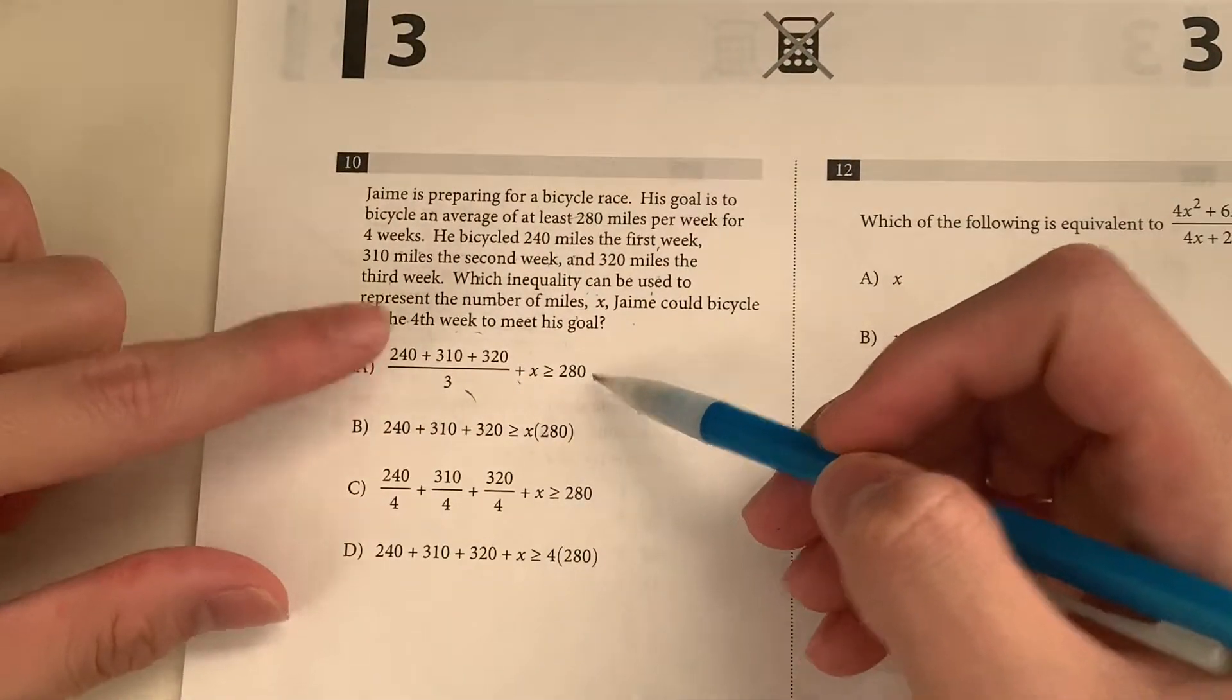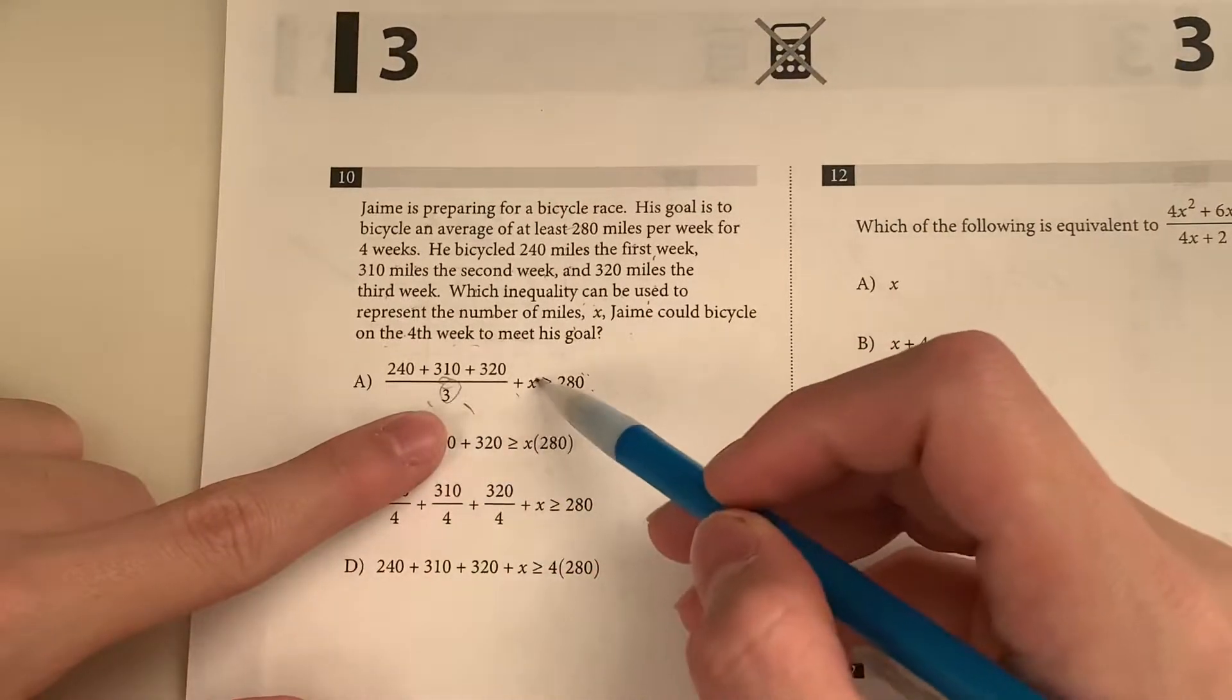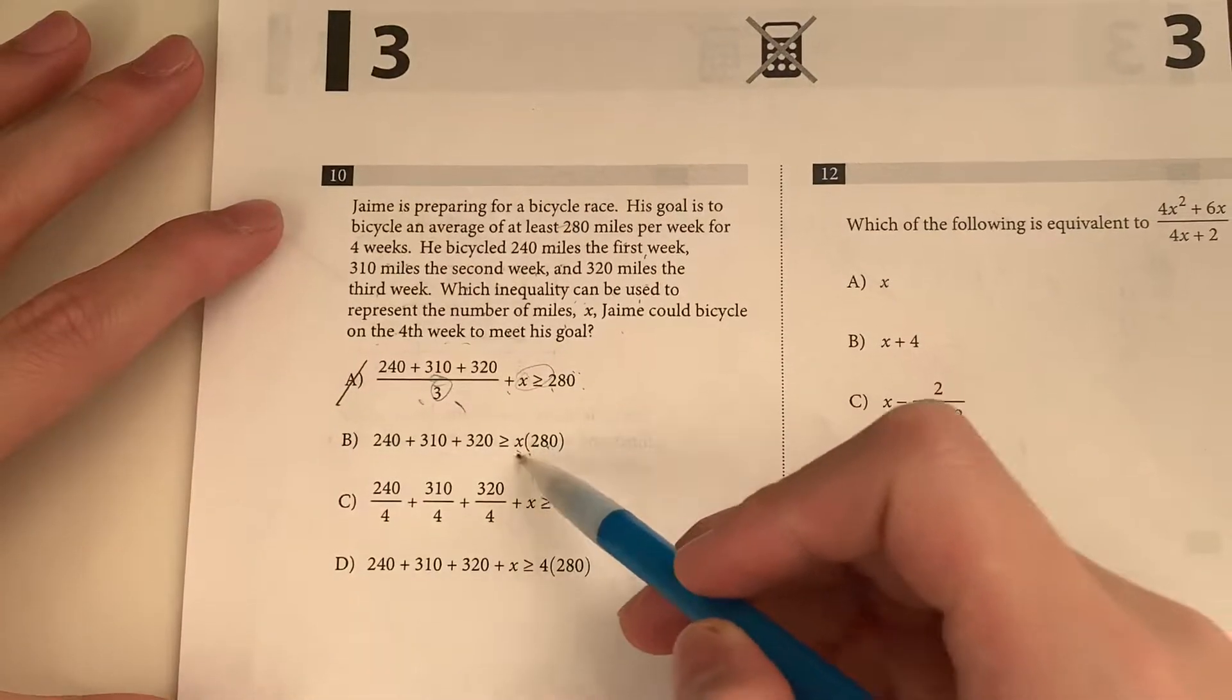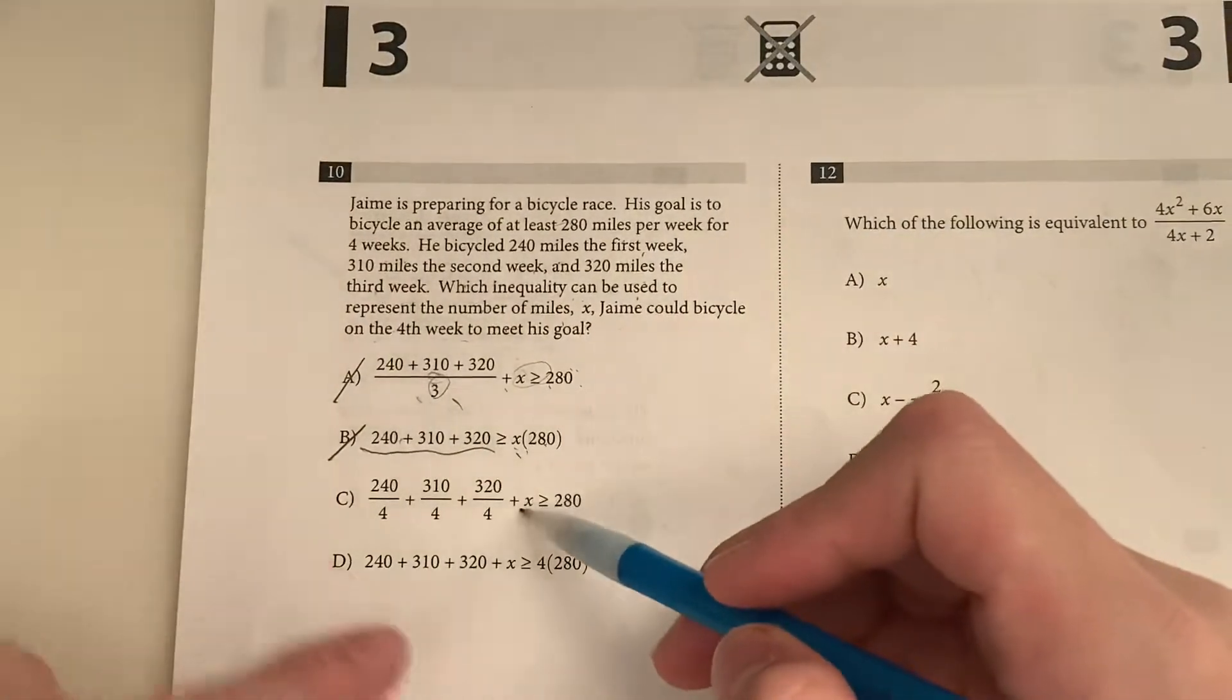So looking at this, first of all, this definitely does not incorporate average, right? Because this 3 doesn't affect the X, so it can't be A. Now, why would the X be multiplying by 280? X should be on this side with these numbers. So it can't be B. This looks right, but as you can see,